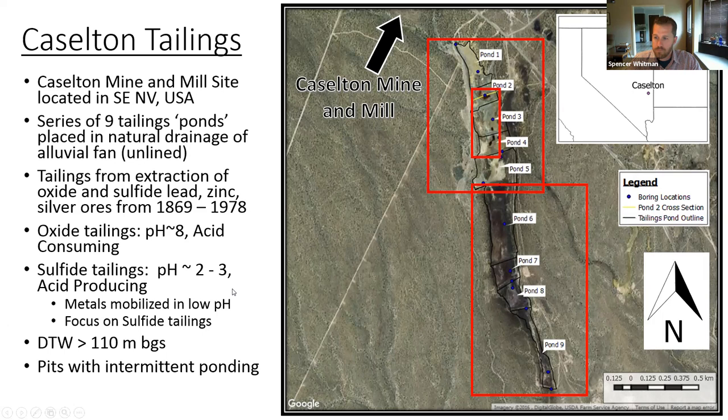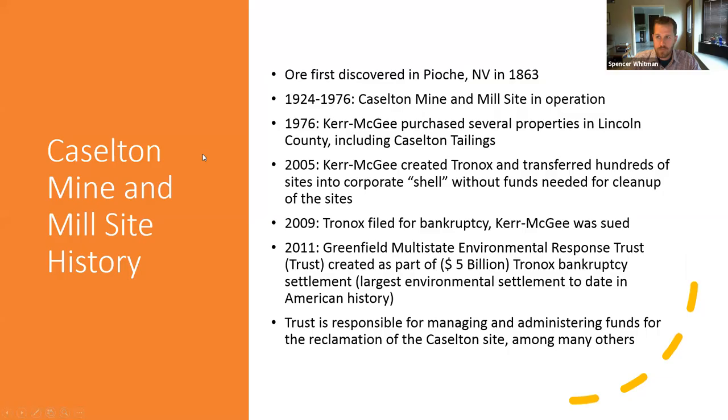The oxide tailings have a pH of about 8 and are acid consuming. The sulfide tailings have a pH of around 2 to 3 and are acid producing. When pH is that low, it mobilizes metals and enhances contaminant transport. There are several pits along the surface from reprocessing the tailings, and you can see from satellite imagery that they're acting as collection areas for runoff during precipitation events.